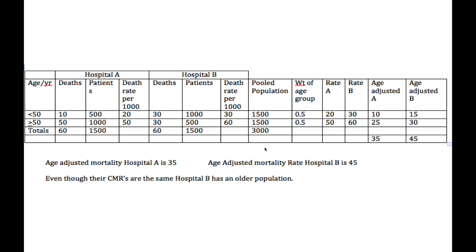The first thing I'm going to do is create my standard population. In this case, I'm calling it a pooled population. I take the total number of patients in Hospital A and the total number of patients in Hospital B, pooling them together for a total of 3,000. There are 1,500 in the age group under 50 years of age, and 1,500 in the age group greater than 50.